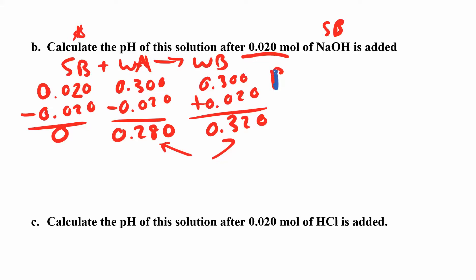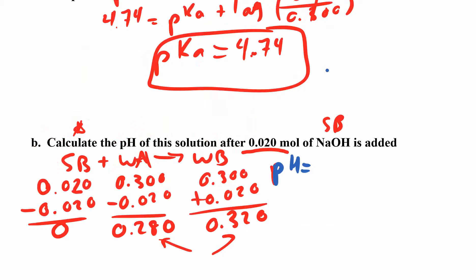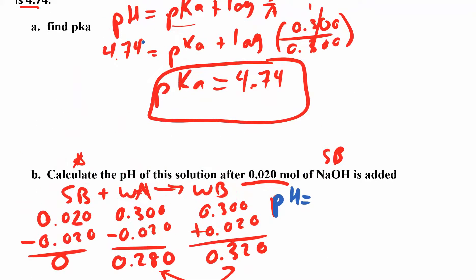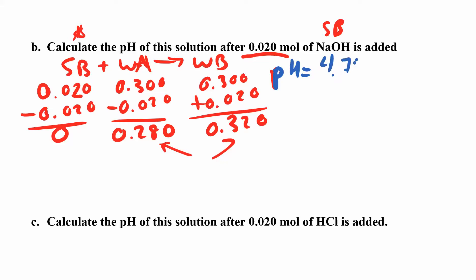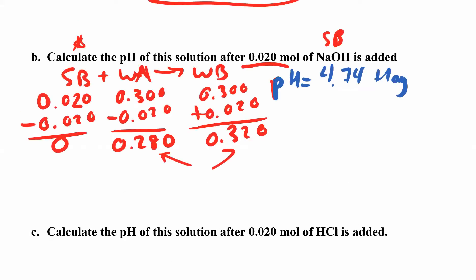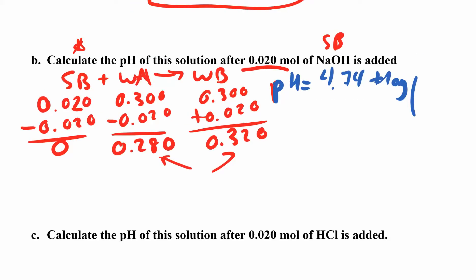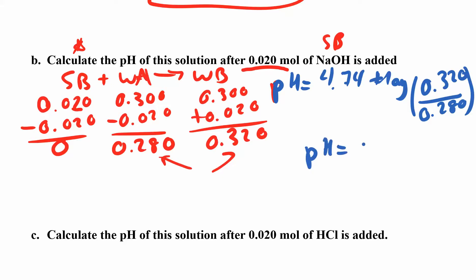Now I can plug this into the Henderson-Hasselbalch equation. pH equals pKa — which we found in part A to be 4.74 — plus the log of the base over the acid. Sometimes they give you the pKa and ask for pH, sometimes they give pH and ask for pKa, so read the question carefully. pH equals 4.74 plus the log of (0.320 / 0.280), and when you work that out you get a pH of about 4.8.